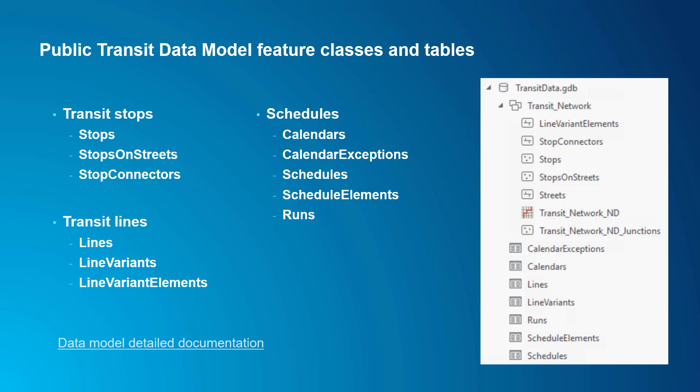The public transit data model consists of a few feature classes for modeling the locations and characteristics of public transit stops and how they connect to streets, some feature classes and tables for modeling transit lines, and some tables for modeling the schedules. I'll go over these quickly here. If you want to learn about each of these in detail, I refer you to the documentation, which is linked from the slide.